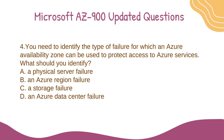Question 4. You need to identify the type of failure for which an Azure Availability Zone can be used to protect access to Azure services. What should you identify? A. A physical server failure. B. An Azure region failure. C. A storage failure. D. An Azure data center failure.